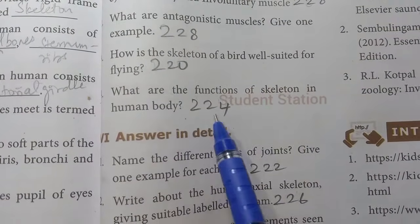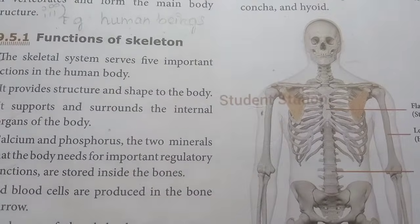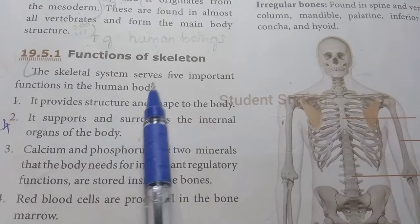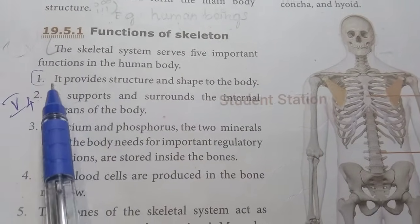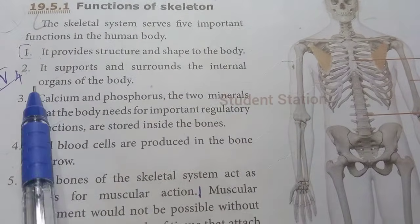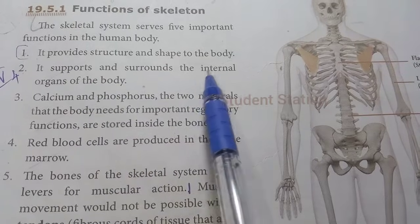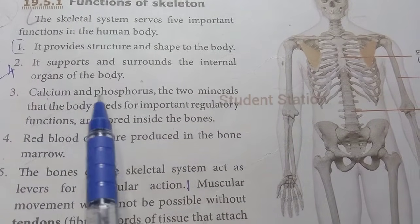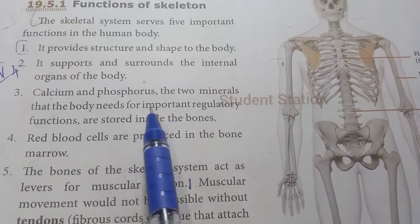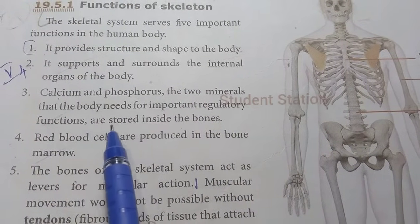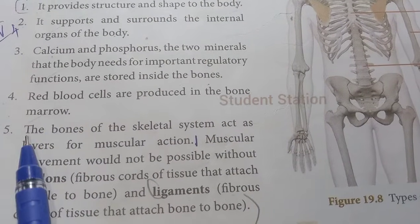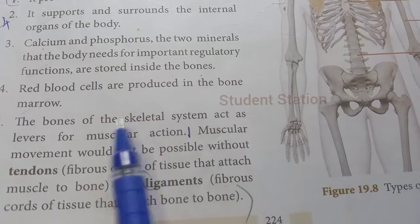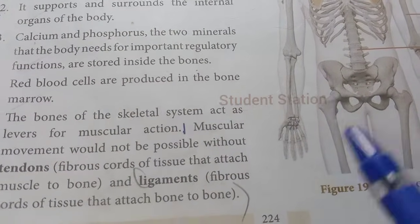Question number 4: What are the functions of the skeleton in the human body? Page 224. The skeletal system serves five important functions: first, it provides structure and shape to the body; second, it supports and surrounds the internal organs; third, calcium and phosphorus are stored inside the bones for important regulatory functions; fourth, red blood cells are produced in the bone marrow; fifth, the bones act as levers for muscular action.